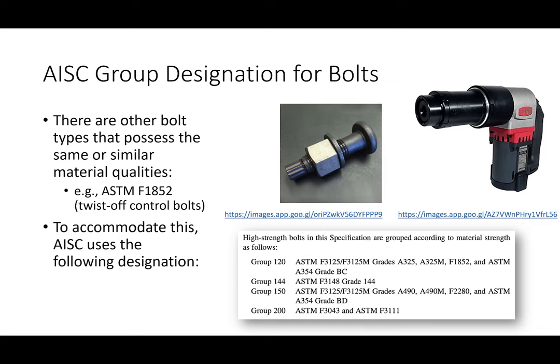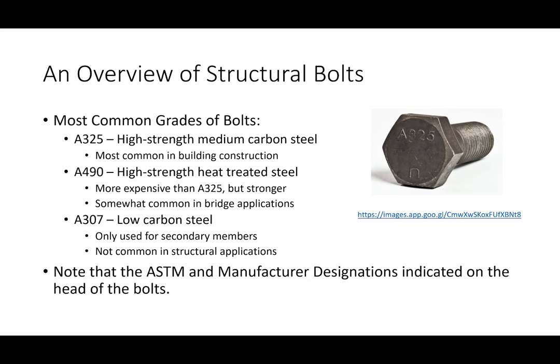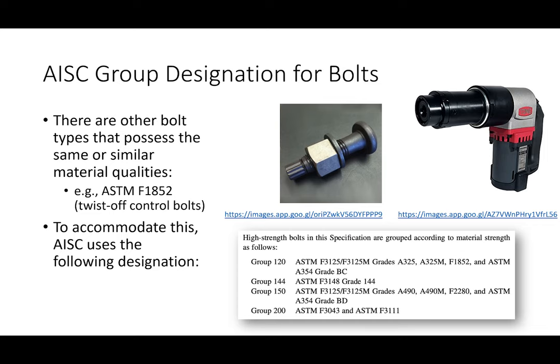This is a different type of fastener — it's called a twist-off control bolt. A twist-off control bolt is used a lot in applications where slip critical is needed. The way it works is you have a special wrench with two chucks: one spins the nut and the other grips the bolt, and they spin in opposite directions. One advantage is that you can tighten the bolt with a wrench only on one side. When you achieve a certain pre-tension, this little splined nub shears off. This is a really common way of doing slip critical installations because it's very fast.